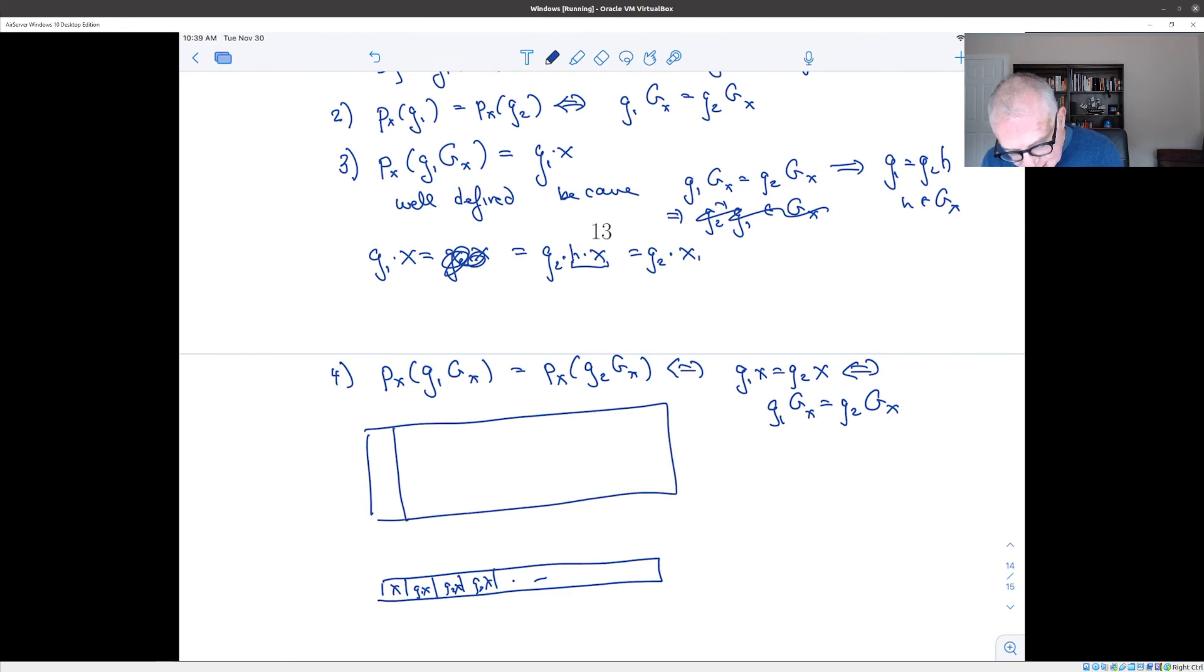And the way the picture works is that if you take any element in the coset and you apply it to x, it takes you to here. So the set of elements of G which take x to G1·x is this coset, that takes x to G2·x is this coset. And so we see that the number of elements in x in the orbit is equal to the number of cosets, which is equal to the index.